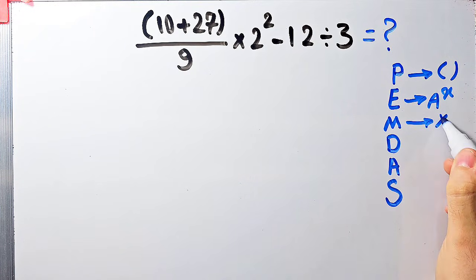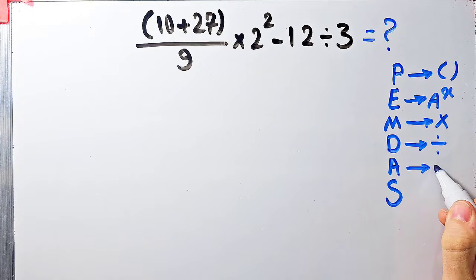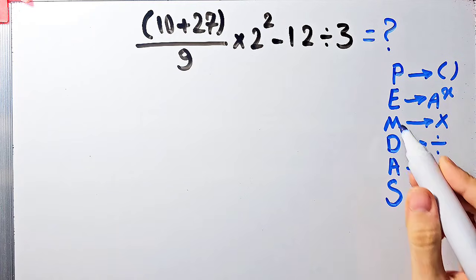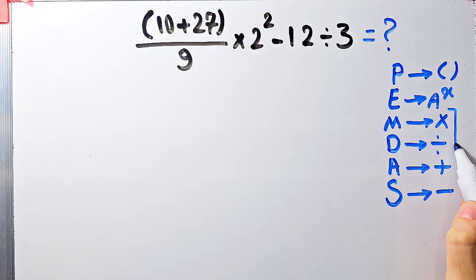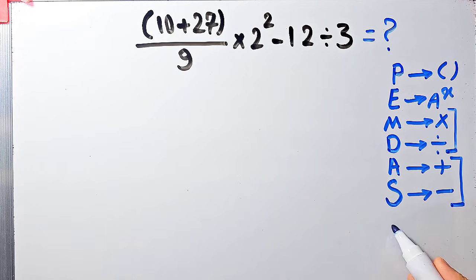M stands for multiplication, D stands for division, A stands for addition, and S stands for subtraction. Multiplication and division have the same level of priority. Also, addition and subtraction have the same level of priority. When we have both in an expression, we start from the left and simplify the question.